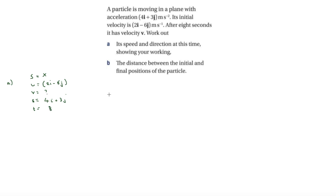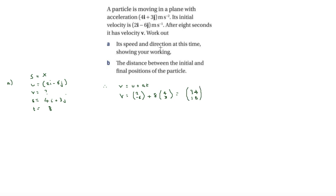Without S, the equation is v equals u plus at. So v equals the vector 2, minus 6, plus 8 times the vector 4, 3. Putting it all into the calculator, we get the vector 34, 18. That is our velocity.